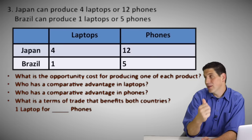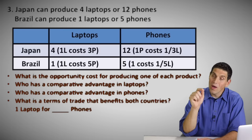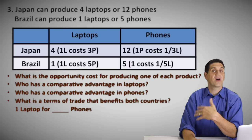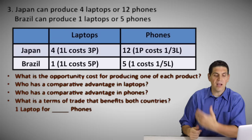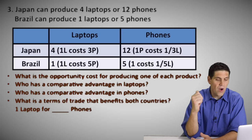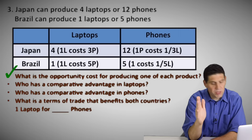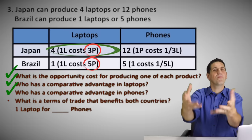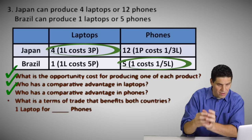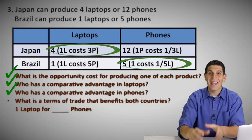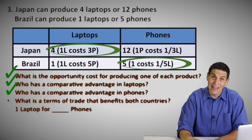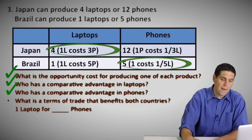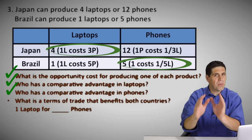Calculate the per unit opportunity cost for one laptop for Japan: one laptop costs three phones they could have produced, and each phone costs one-third of a laptop. For Brazil, each one laptop costs five phones, and each phone costs one-fifth of a laptop that Brazil could have produced. Who should specialize in what? Japan should specialize in laptops because they have a lower opportunity cost — three phones versus Brazil's five phones. Brazil has a comparative advantage in phones because one-fifth is less than one-third. On your test, if asked why, write in the numbers: Japan has a comparative advantage in laptops because three is less than five.